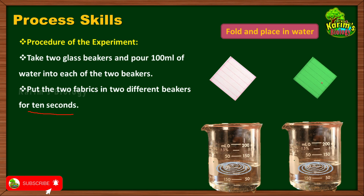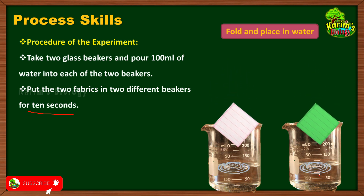If the girl puts the cotton fabric in water for 20 seconds and synthetic fabric for 30 seconds, she will get a wrong result. That is why the time factor is the third variable she has to control — both fabrics must be dipped in water for exactly 10 seconds. We are going to dip these two fabrics, after folding them, into the beakers filled with water.